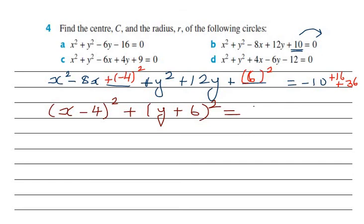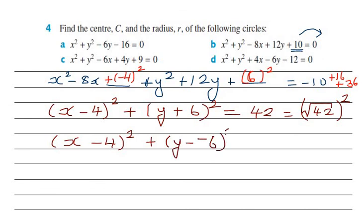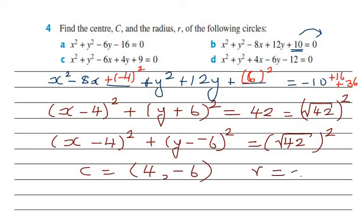The equation becomes (x - 4)² + (y + 6)² = -10 + 16 + 36 = 42. Writing in standard form: (x - 4)² + (y - (-6))² = (√42)². So the center is (4, -6) and the radius is √42. Since √36 = 6 and √49 = 7, the radius is approximately 6-point-something.